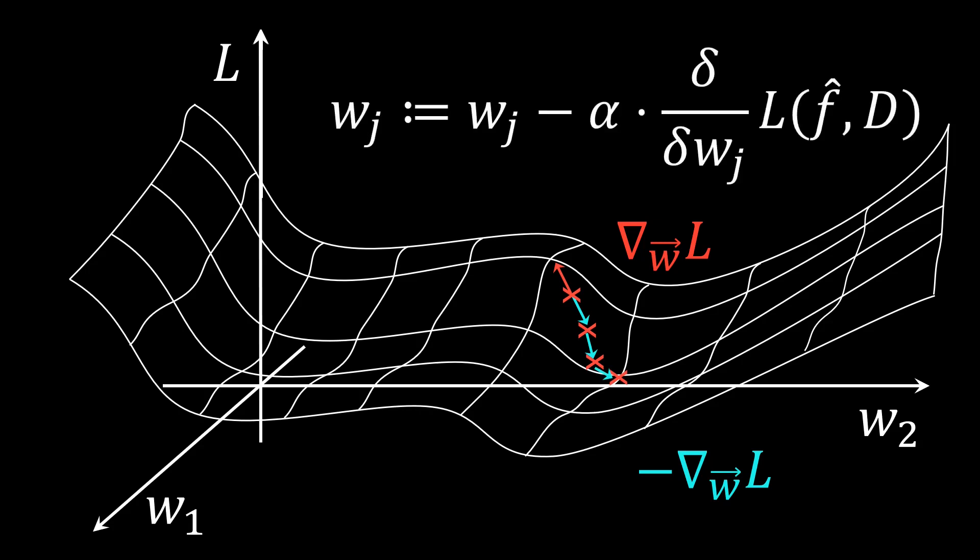Formally, we update every weight based on the partial derivative of the loss with respect to that weight. Here, we introduce a multiplicative factor alpha to the update, which is a hyperparameter called the learning rate.